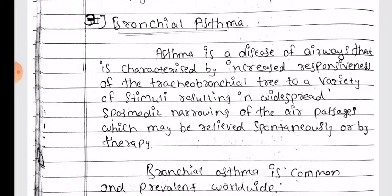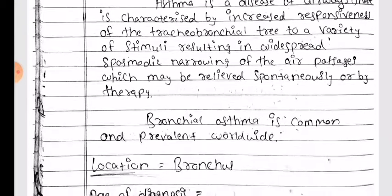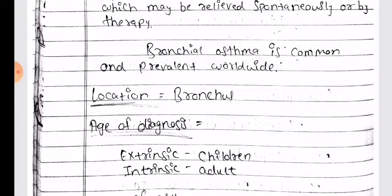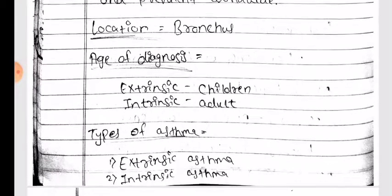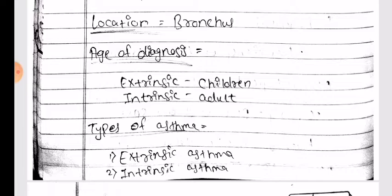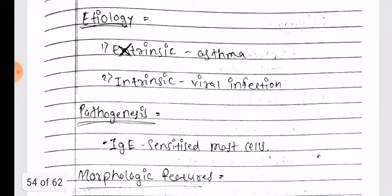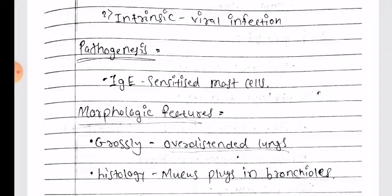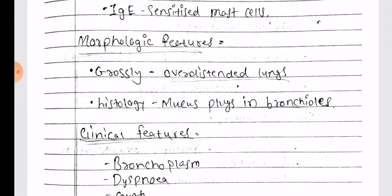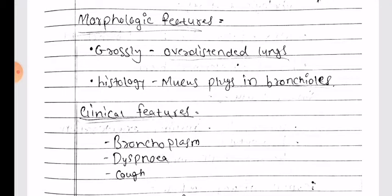Bronchial asthma is a disease of the airway characterized by increased responsiveness of the tracheobronchial tree to a variety of stimuli, resulting in widespread spasmodic narrowing of the air passages which may be relieved spontaneously or by therapy. It is common and prevalent worldwide. Location: bronchus. Age of diagnosis: extrinsic in children and intrinsic in adults. Types: extrinsic and intrinsic asthma. Etiology: extrinsic asthma and intrinsic — viral infections. Pathogenesis: IgE-sensitized mast cells. Morphologic features: grossly overdistended lungs; histologically, mucus plugs in the bronchioles.